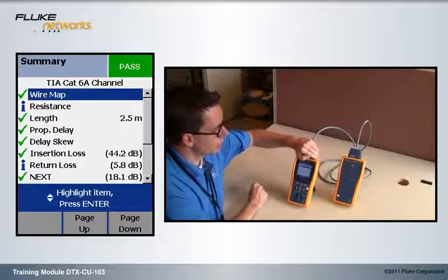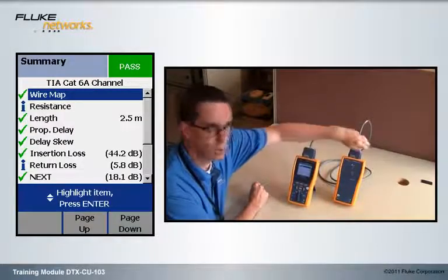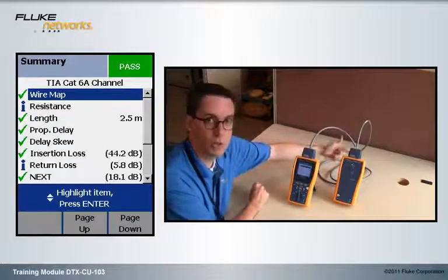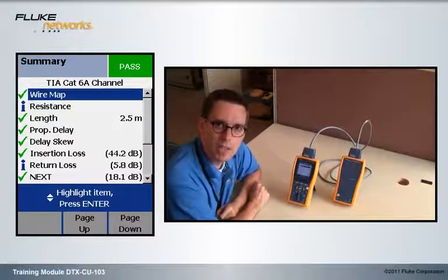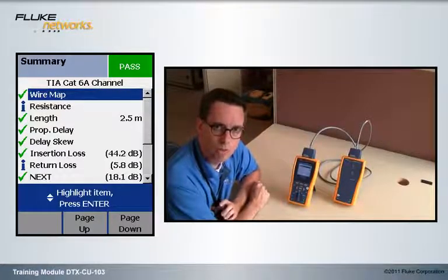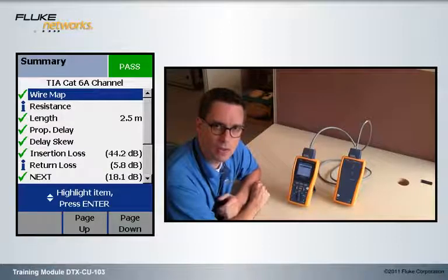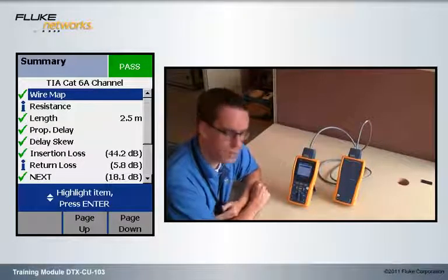The reason why is two-fold. Not only are we ignoring that RJ45 plug termination here and also at the remote, so we're just measuring cable, we're not measuring connections, we're also applying the TIA CAT6A channel limit line, which is based on four connectors. It's very much a relaxed limit line as what is stated in the standard.